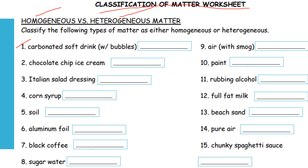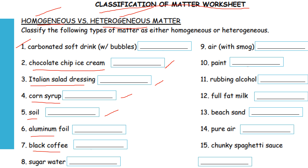Carbonated soft drinks with bubbles — homogeneous or heterogeneous? Chocolate chip ice cream — homogeneous or heterogeneous? Italian salad dressing — homogeneous or heterogeneous? Corn syrup — homogeneous or heterogeneous? Soil — homogeneous or heterogeneous? Aluminum. Black coffee. Sugar.